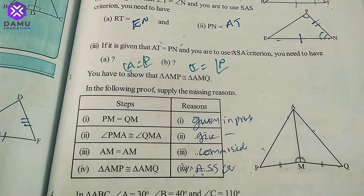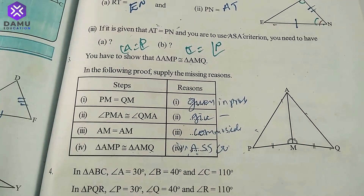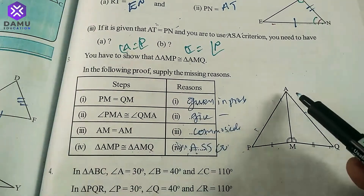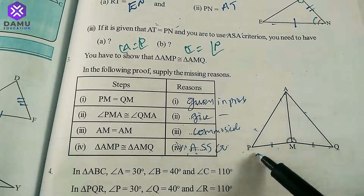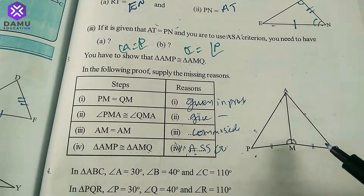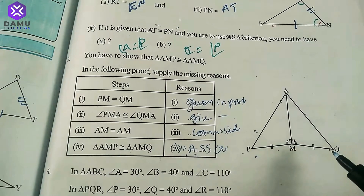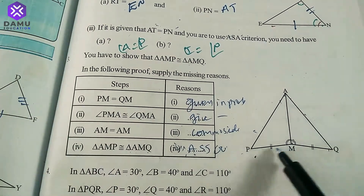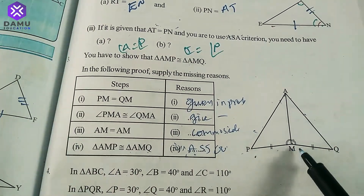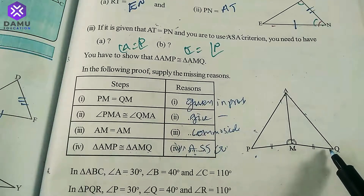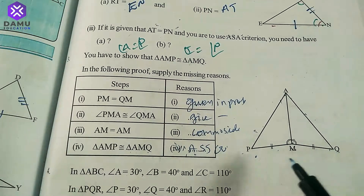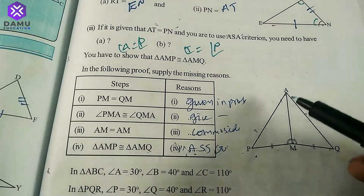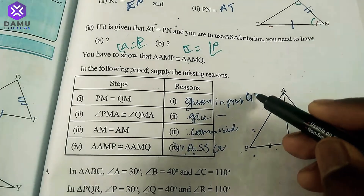The third question: you have to show that triangle AMP is congruent to triangle AMQ. Step one: PM = MQ — these are equal. The reason is they are given; the two equal lines are given.